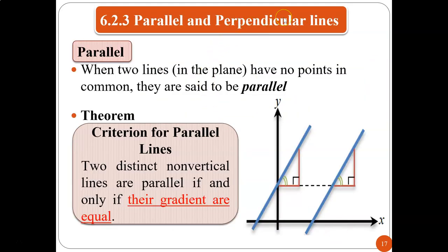This is parallel and perpendicular lines (garis selari dan garis berserenjang). Parallel lines are two lines in a plane that have no points in common — they do not touch (tidak bersentuhan). The criterion for parallel lines: two distinct non-vertical lines are parallel if and only if their gradients are equal — M1 equals M2.